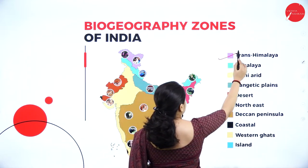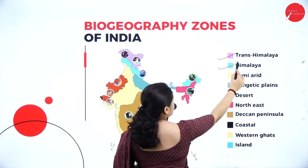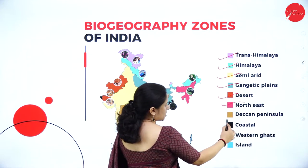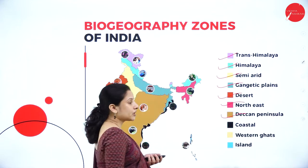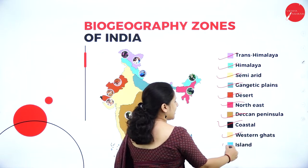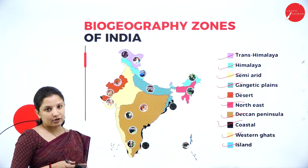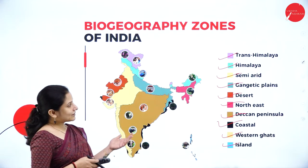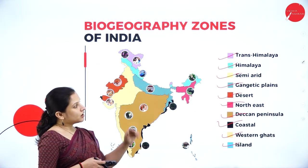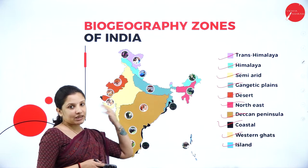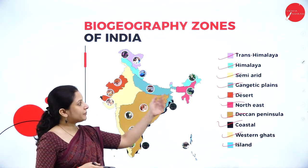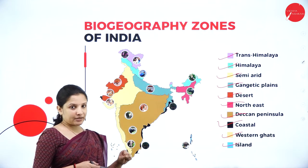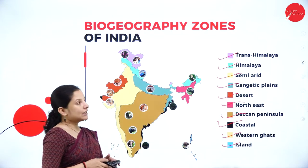The 10 different biogeographic zones in India are: the Trans-Himalayan region, the Himalayan region, the semi-arid region, the Gangetic Plains, the desert, the northeastern region, the Deccan Peninsula, the coastal region, the Western Ghats, and the islands — which consist of the Andaman and Nicobar Islands. The Himalayan region organisms are completely different from the desert region, and based on the type of organisms and habitat, these biogeographic regions are divided.